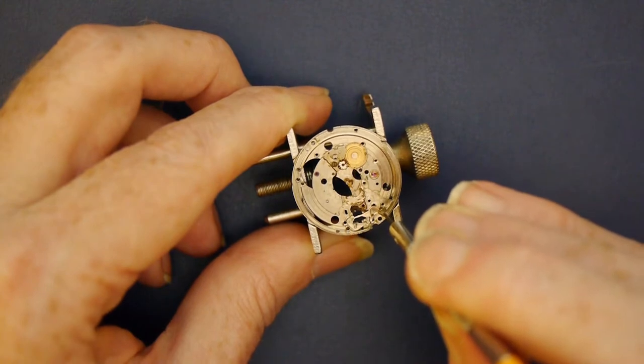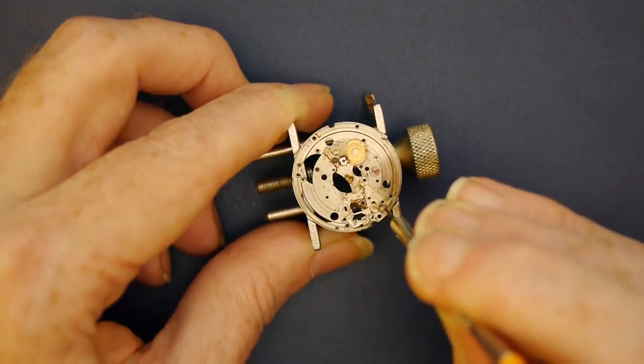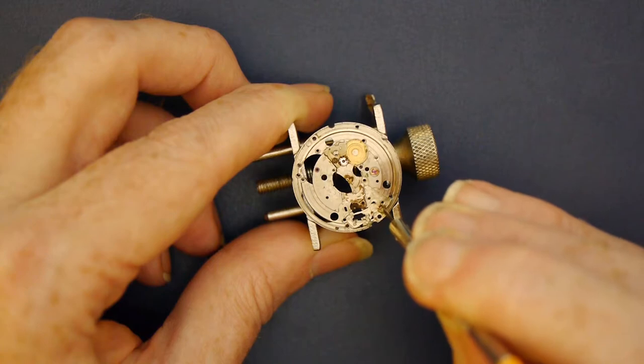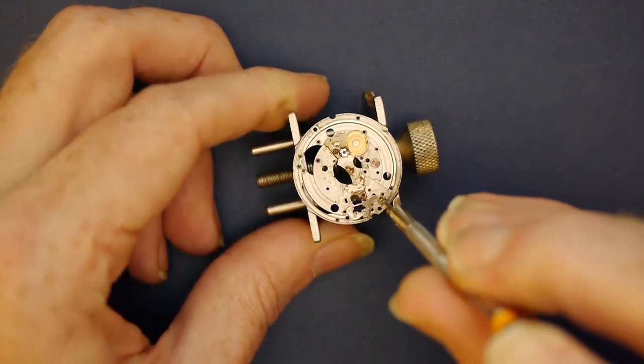After removing two parts, the next part of the keyless works on the right appeared to be held in place by another screw with a damaged head. The slot was visible, but much of one side seemed to have been gouged away.